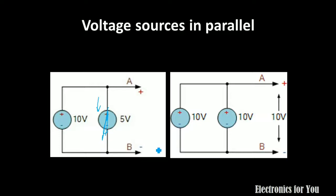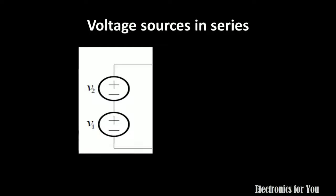If two equal ideal voltage sources are connected in parallel — for example, two 10-volt supplies — then the resultant voltage source will be equal to 10 volts. They will not get added or subtracted. One should note that the resultant voltage will be equal to the applied voltage.